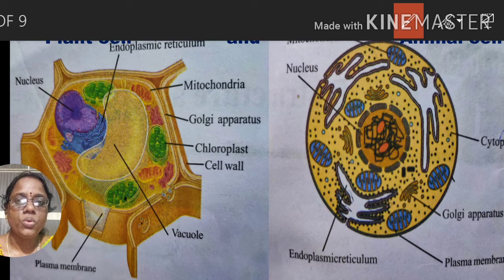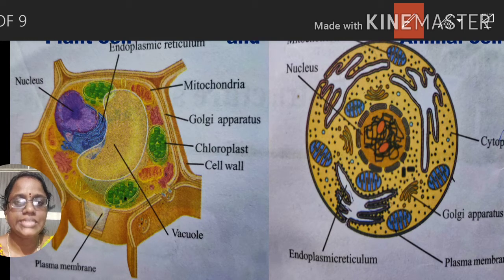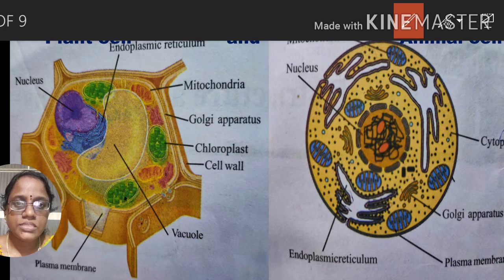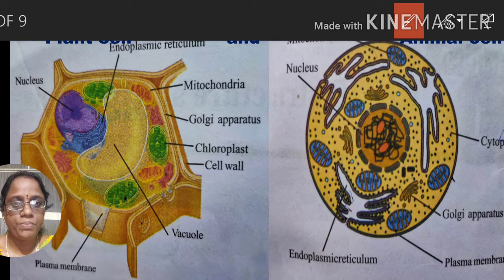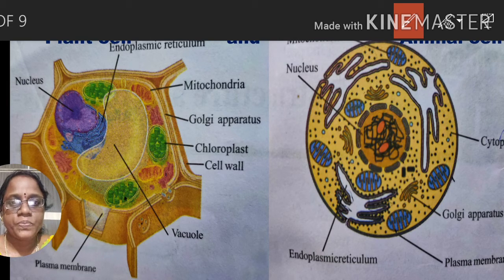First, before we learn about the differences and similarities, we should know what is a cell. Cell is the basic structural and functional unit of life. Any living organisms are made up of cells only. Without cells, no living organisms exist.